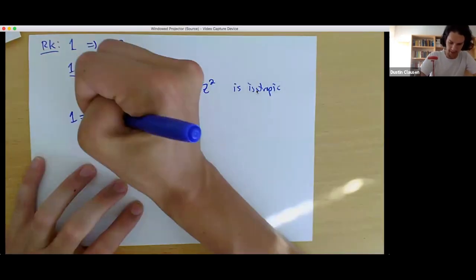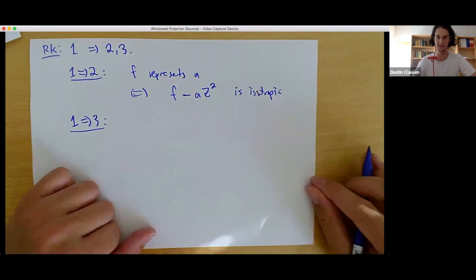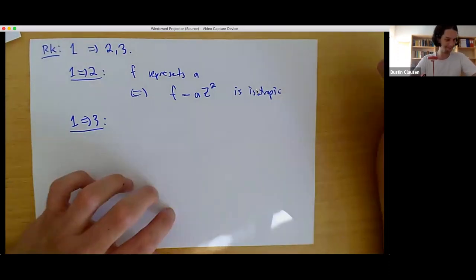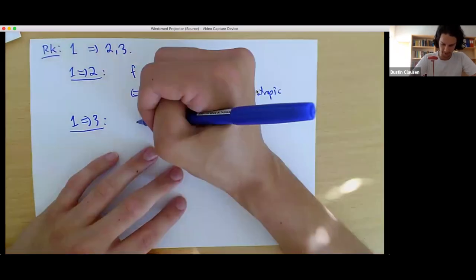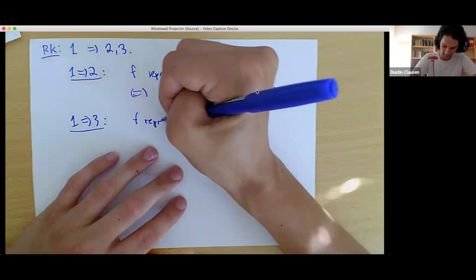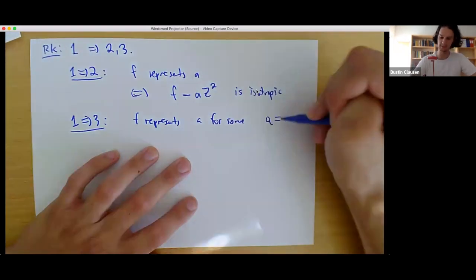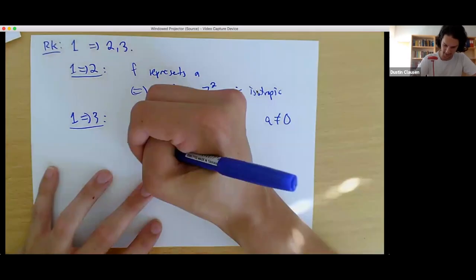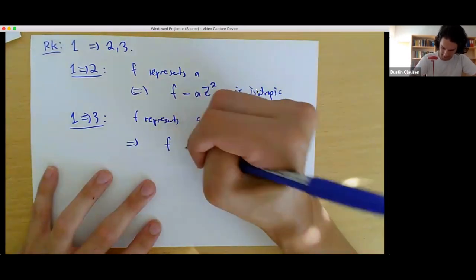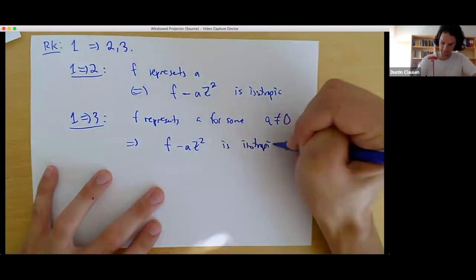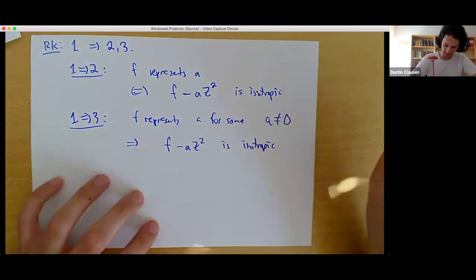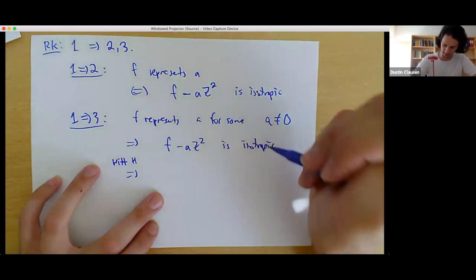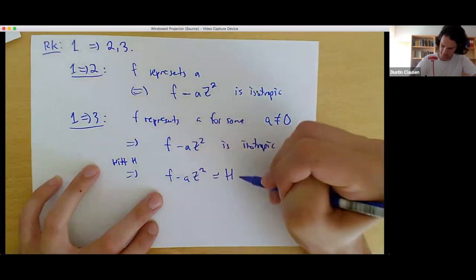For one implies three, this is a little more complicated and it uses these cancellation theorems — Witt cancellation and hyperbolic splitting. So F and G are two quadratic forms over Q. Note that F represents A for some non-zero A; you just choose some random non-zero value of F. And then F minus AZ squared is isotropic. By Witt's hyperbolic theorem, since it's isotropic, we can split off a hyperbolic form: F minus AZ squared is isomorphic to some H direct sum F prime.